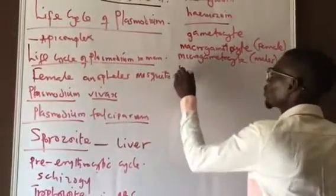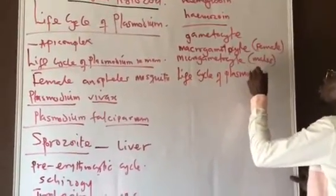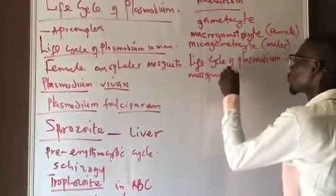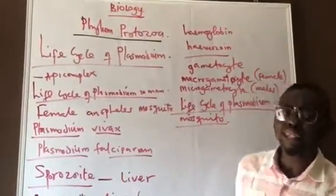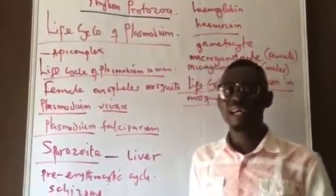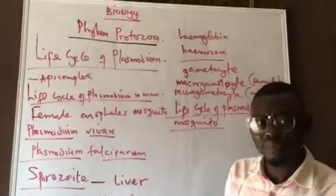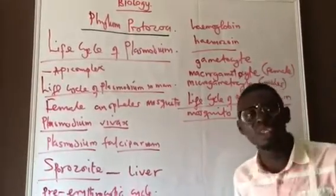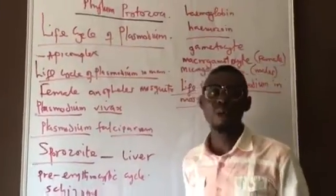Now the life cycle of Plasmodium in the mosquito: when a mosquito sucks the blood of an infected person — someone suffering from malaria who already has the parasite — it ingests the gametocyte stage into its own body. The gametocytes then go directly to the digestive system of the mosquito.